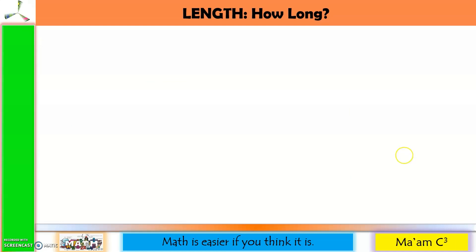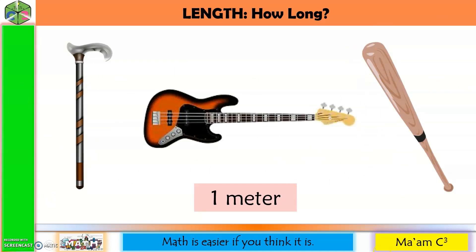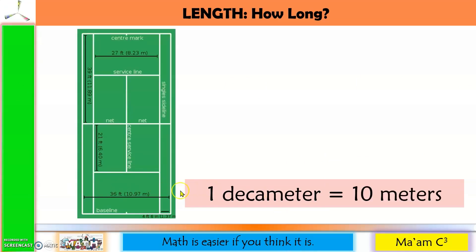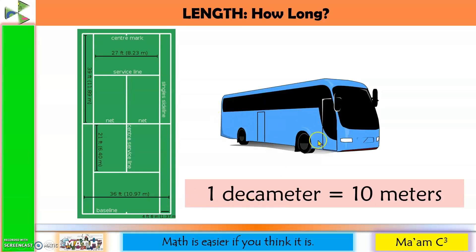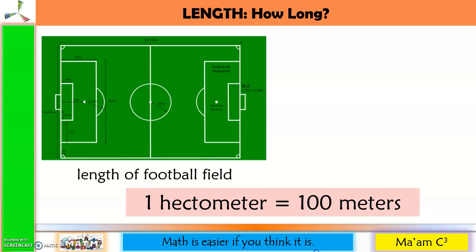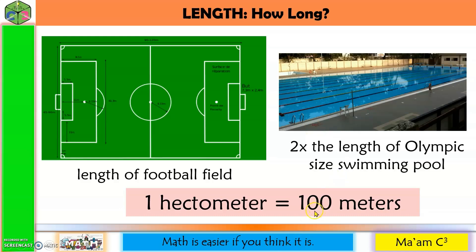Do you have any idea how long 1 meter is? Some good approximations of 1 meter include a walking cane, a guitar, and a baseball bat. For 1 decameter, which equals 10 meters, the width of a tennis court for doubles measures 10.97 meters — close enough to 1 decameter. There are also buses that measure 1 decameter long. One hectometer equals 100 meters; the length of a football field is a good estimate, and twice the length of an Olympic-sized swimming pool (50 meters) also equals 100 meters.